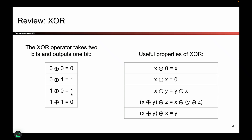Here are some useful properties. One particularly useful one is this last one: if you have some value X XOR Y, and you XOR that again with X, you can think of the two Xs as canceling out. If you take a bit and XOR it with itself, it gets zero. And if you take zero and XOR it with anything, that bit stays unchanged. So if you take two bits XOR'd together and XOR it by one of the bits, that bit cancels out, and you're just left with Y.